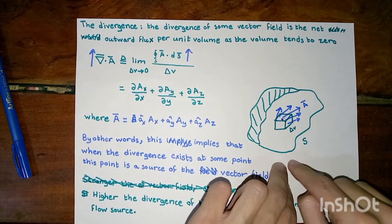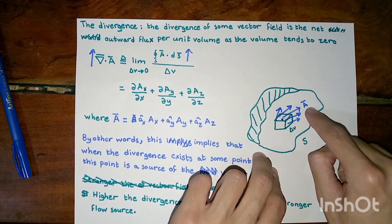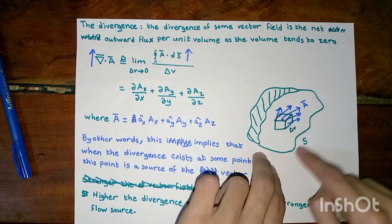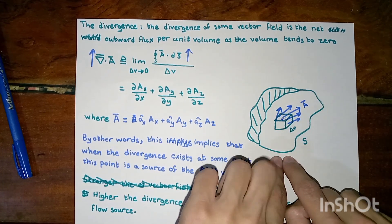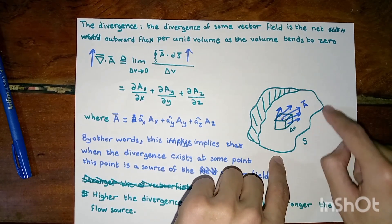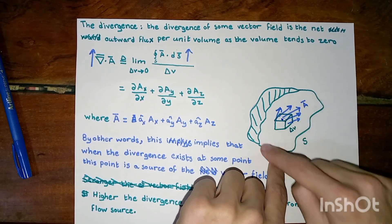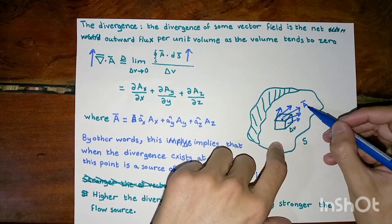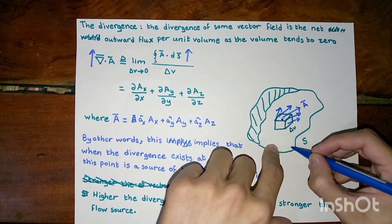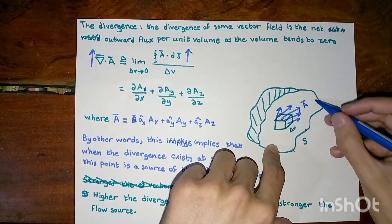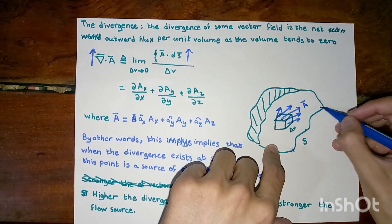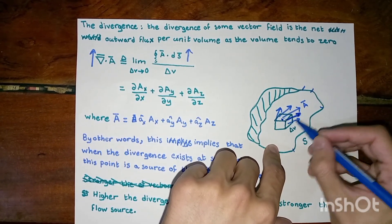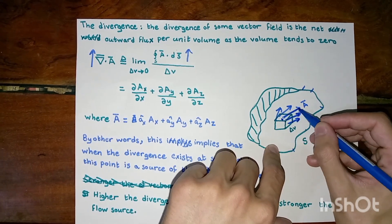In this graph we have a vector field A which is getting out of some random volume in space. This volume has a surface S, which is the unshaded area. When we take the surface integral of A with respect to this surface, we will end up with the net outward flux coming out of this area.